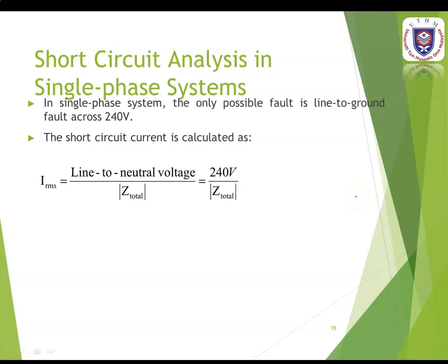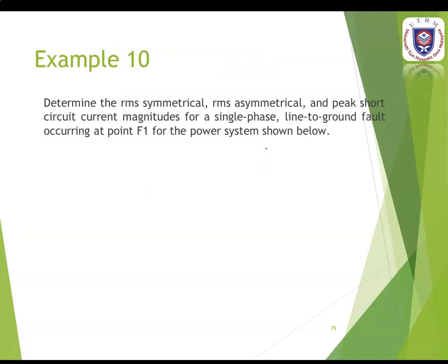We continue with the short circuit analysis in single-phase systems. In a single-phase system, the only possible fault is a line-to-ground fault across 240 volts. The short circuit current is calculated as IRMS = line-to-neutral voltage (V-phase) divided by the magnitude of the total impedance. V-phase must be 240 volts for single-phase. Example 10: determine RMS symmetrical, RMS asymmetrical, and peak short circuit current magnitude for a single-phase line-to-ground fault at F1.